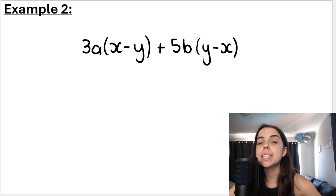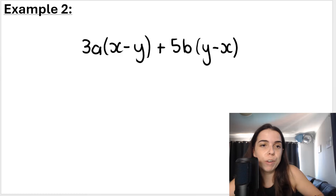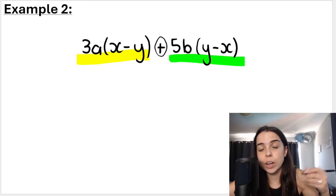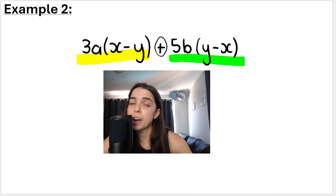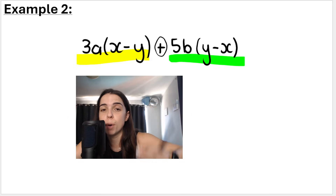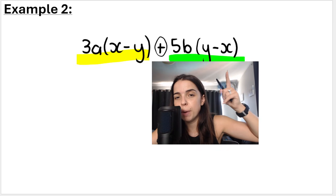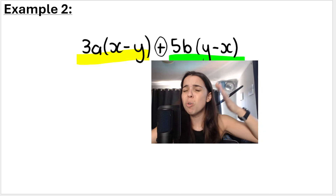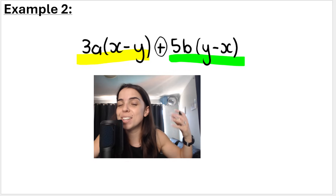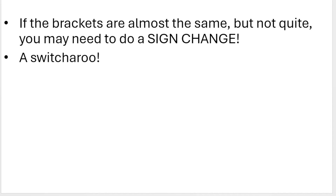In the second example, something is a little bit off. First, how many terms do I have? There's a term and this is a term, separated by a plus. If you ask what the two terms have in common, they almost have the bracket in common — this bracket is (y minus x) and this bracket is (x minus y). So almost the same, but not exactly the same. If you get a situation like this, what we have to do is apply what we call a sign change, or a switcheroo, when the brackets are almost the same but not quite.